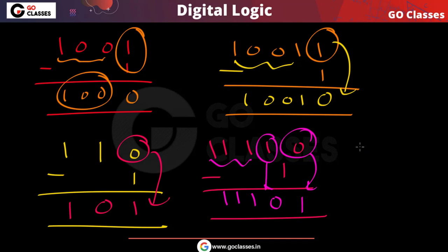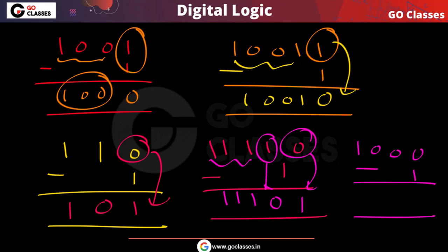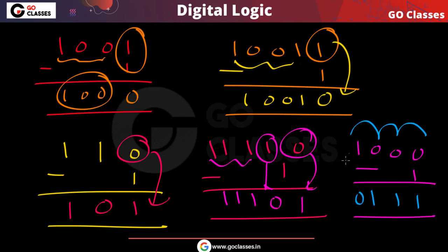Consider 1000. If you want to decrease by 1, there is a borrow propagating. These 0s become 1, 1, and this 1 becomes 0, and if there are any more 1s after that, they remain as they are. So this is the idea.